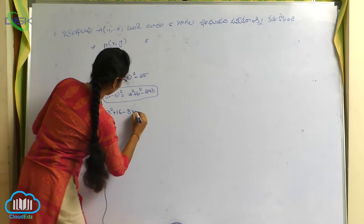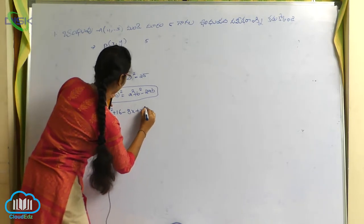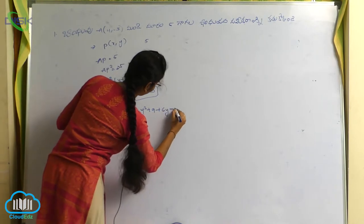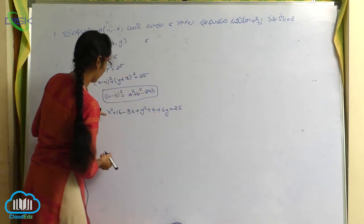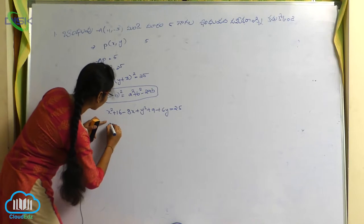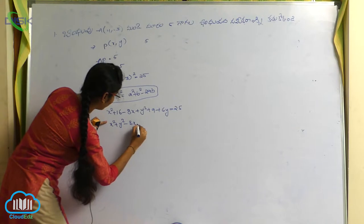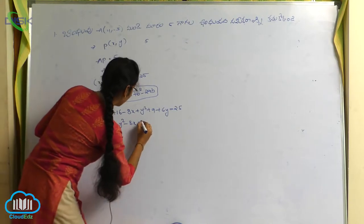Plus y square plus 9 plus 6y is equals to 25. Ok, x terms, y terms, x square plus y square minus 8x plus 6y.